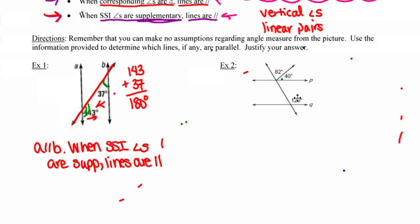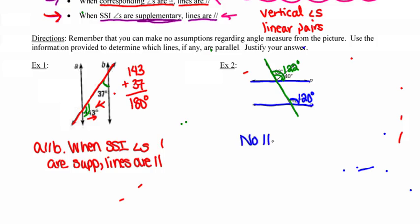In the next example, I've got an angle that's marked 120, and then the one that corresponds with that — if I look at this picture — is this one upstairs that's made up of the 82 and the 40. If I combine those together, the result is 122 degrees. So I've got this pair of corresponding angles where one measures 120 and the other measures 122. Since the corresponding angles are not congruent, the lines are not parallel — no parallel lines, because the corresponding angles are not congruent.